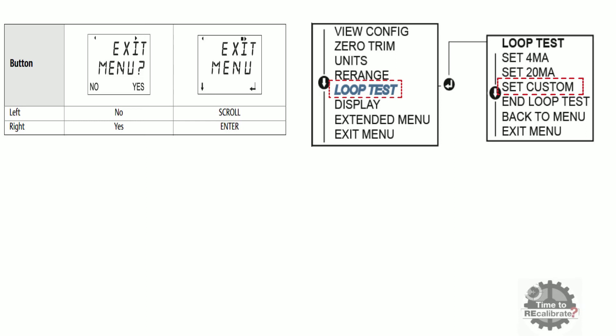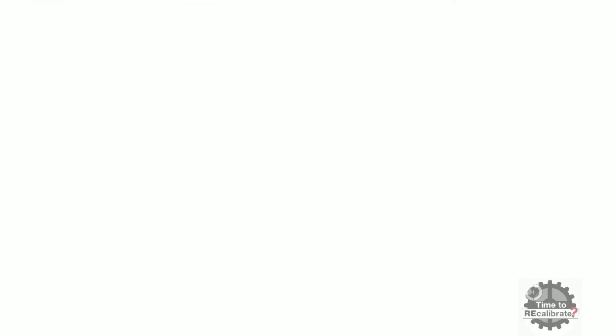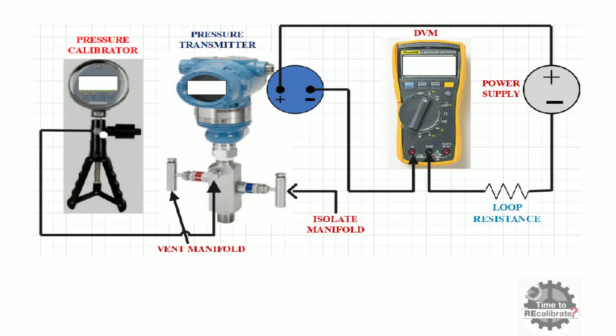In set custom option, we can manually enter the milliamps value into transmitter. So, first of all, set 4mA value by using LH button and press RH button to enter this value into transmitter. After pressing RH button, connect digital voltmeter in series to measure milliamps value. Measured milliamps value will be close to 4mA.